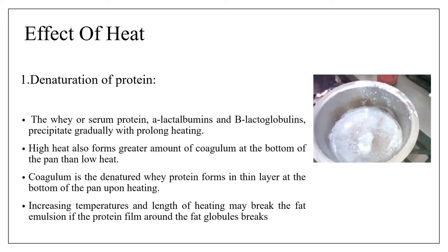Effect of heat: denaturation of protein. The whey or serum proteins, alpha-lactalbumin and beta-lactoglobulin, precipitate gradually with prolonged heating. High heat forms greater amounts of coagulum at the bottom of the pan than low heat. The higher the heat, the more formation of coagulum will occur. Coagulum is the denatured protein that forms in a thin layer at the bottom of the pan upon heating.